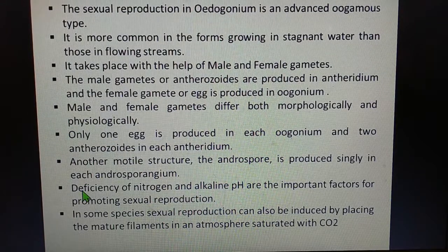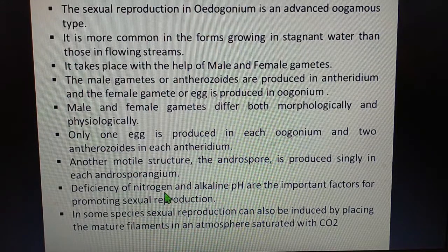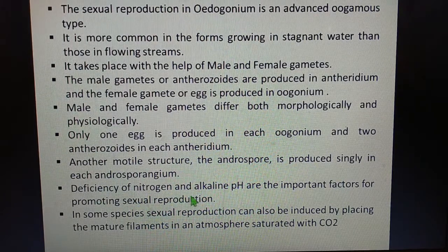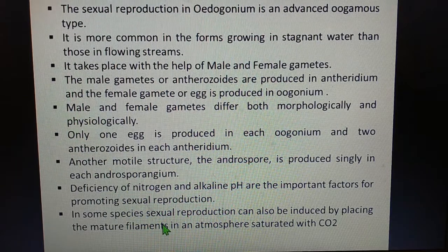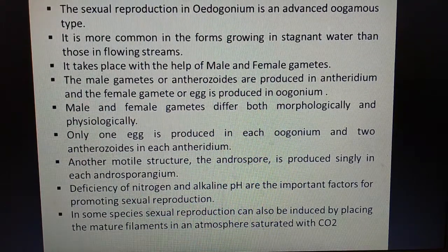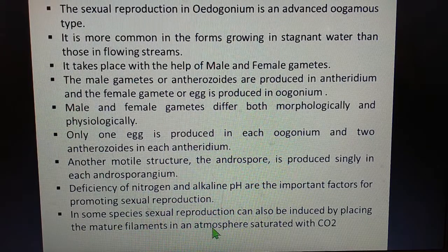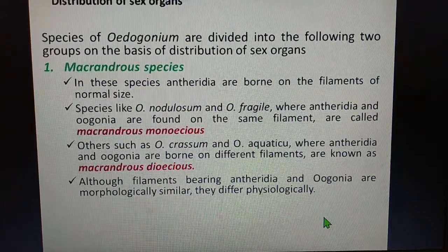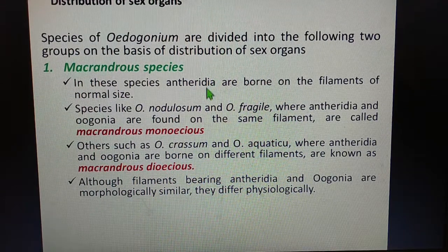The deficiency of nitrogen or nitrogenous substances as well as alkaline pH are important factors which promote sexual reproduction in Oedogonium. In some species, sexual reproduction can also be induced by placing the major filaments in an atmosphere saturated with carbon dioxide.